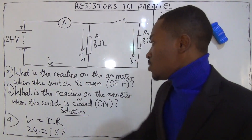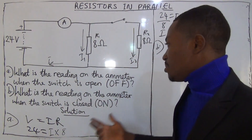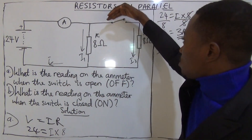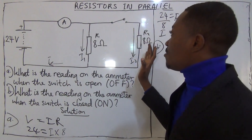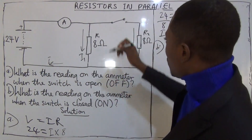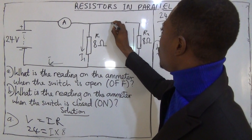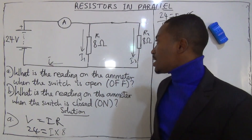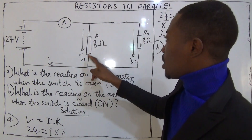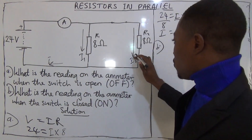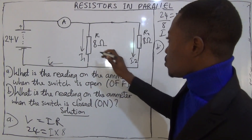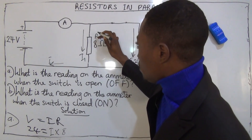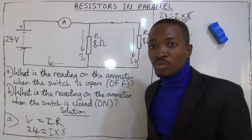Now, what is the reading on the ammeter when the switch is closed? When you close the switch, you have a parallel arrangement. The circuit now has I1 flowing through R1 and I2 flowing through R2.